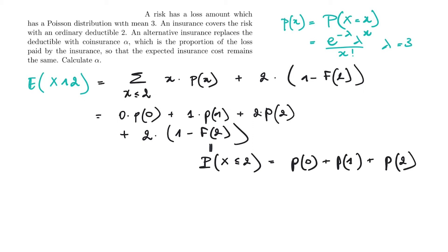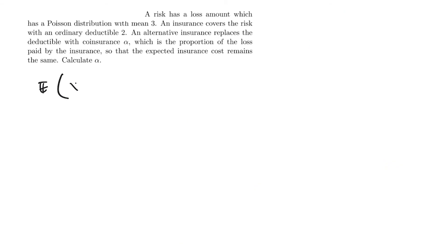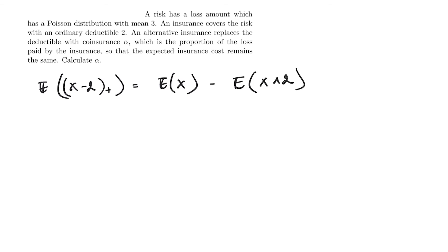Using the Poisson formula, the limited expected value evaluates to approximately 1.751065. Combining the expected value of X and the limited expected value, we get 3 minus 1.751065, so the expected insurance cost with a deductible of 2 is equal to 1.248935.